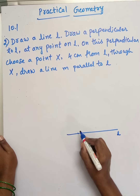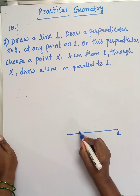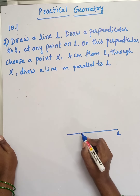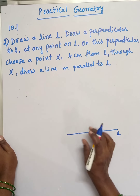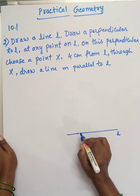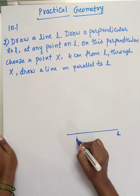Draw a perpendicular using compass and ruler. With the help of compass and ruler, choose a point on line L to begin the construction.